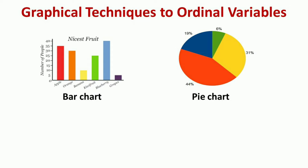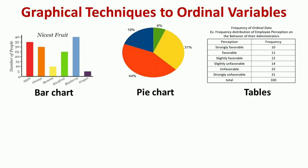Similarly, we have a pie chart. A pie chart shows how a total amount is divided among distinct categories as a circle divided into various slices. Each category is associated with a single slice whose size corresponds to the category's proportion of the total. A table can also be used for displaying ordinal data and its frequencies. In one part we take the perception or statement, and in the second part we represent its frequencies.